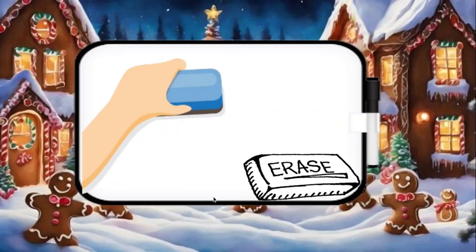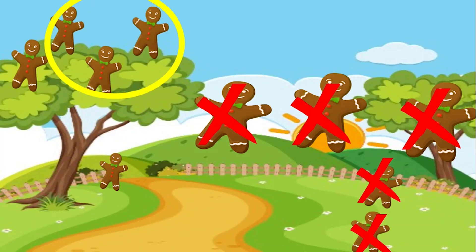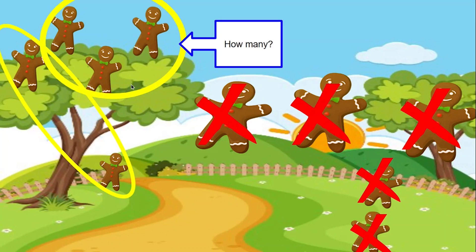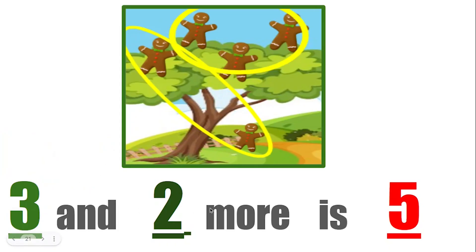Erase your board. Now cross out those 5 gingerbread men again. How many gingerbread men are left? Yes, 5. Circle 3 gingerbread men, now circle 2 gingerbread men. How many are in the larger group? Yes, 3. How many are in the smaller group? Yes, 2. How many in all? Yes, 5. 1, 2, 3, 4, 5. 3 and 2 more is 5.